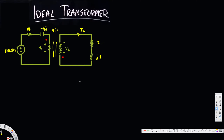In this video we are going to see an example of ideal transformers. In this particular problem we are asked to find the V1 and V2 values. Before we go ahead and do this problem, let's simplify this circuit. We have two impedances that are separated, so we can combine these two together. Let's draw the new circuit with a different color.